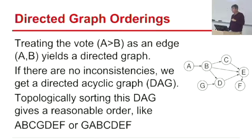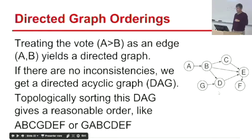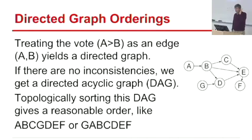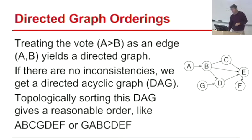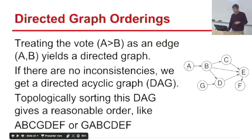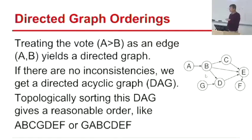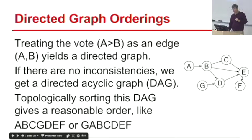This connects to topological sorting from graph algorithms. Topological sorting, given a directed acyclic graph, orders the vertices so that all edges go from left to right — if I'm better than you, I come before you. What's good about topological sorting? It's linear time — fast and easy to compute and interpret.